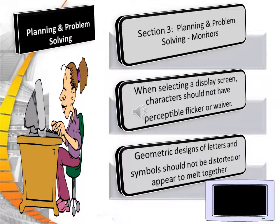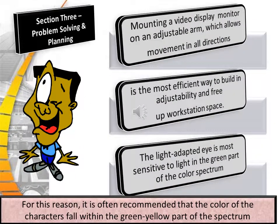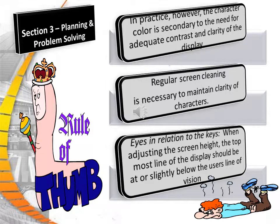Section 3: Planning and Problem Solving. Geometric designs of letters and symbols should not be distorted or appear to melt together. Screens which swivel horizontally and tilt or elevate vertically enable the operator to adjust for viewing angle. Mounting a video display monitor on an adjustable arm which allows movement in all directions is the most efficient way to build in adjustability and free up workstation space. The light-adapted eye is most sensitive to light in the green part of the color spectrum, and it is often recommended that character color fall within the green-yellow spectrum. However, character color is secondary to the need for adequate contrast and clarity of the display.